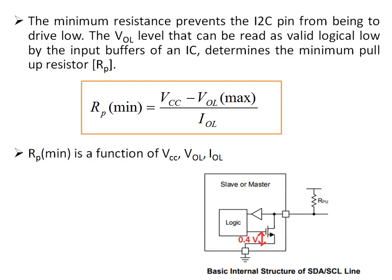The minimum resistance value prevents the I2C pin from being driven too low. If a resistance below Rp(min) is connected, it prevents the I2C pin from being driven low — the pin will always remain high. The VOL level that can be read as logic low by input buffers of an IC determines the minimum pull-up resistor: Rp(min) equals (VCC − VOL(max)) divided by IOL. IOL is the pull-down current defined as 3 milliamperes maximum, with a maximum of 0.4 volts developed across the switch.